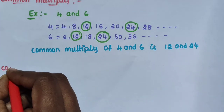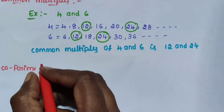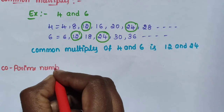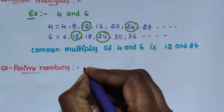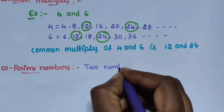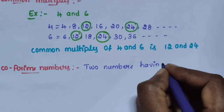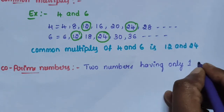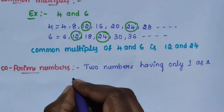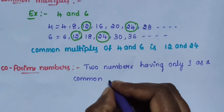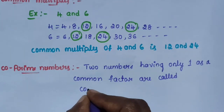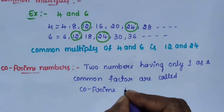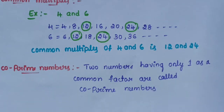Next is co-prime numbers. Two numbers having only 1 as a common factor are called co-prime numbers. For example, 7 and 16.